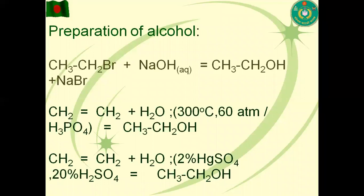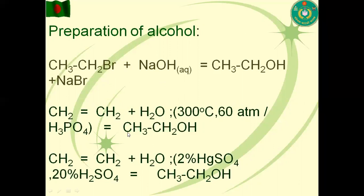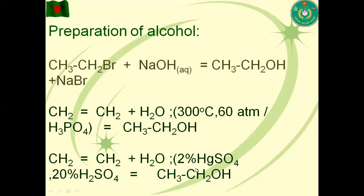Preparation of alcohol: alkyl bromide reacts with aqueous sodium hydroxide or aqueous potassium hydroxide to form alcohol. Alkene reacts with water in the presence of 300 degrees Celsius, 60 atmosphere pressure, and phosphoric acid to form alcohol — this is a hydration reaction. These are nucleophilic substitution (SN) reactions.